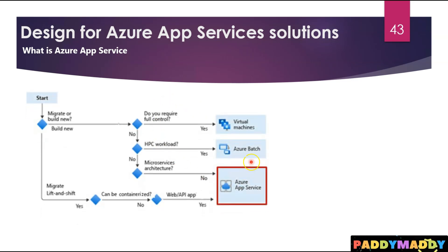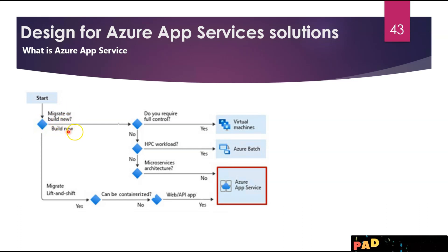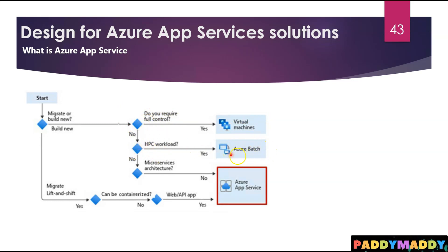This is the flowchart we'll discuss in this lecture. If you are developing any HTTP-based service, think about whether it's a migration or a new build. For migration, that's a lift and shift. If building new and you require full control, you'd go with a virtual machine. For high-performance computing workloads, you'd use Azure Batch services. For microservices architecture, you'd go with containers. Otherwise, you would choose App Service.